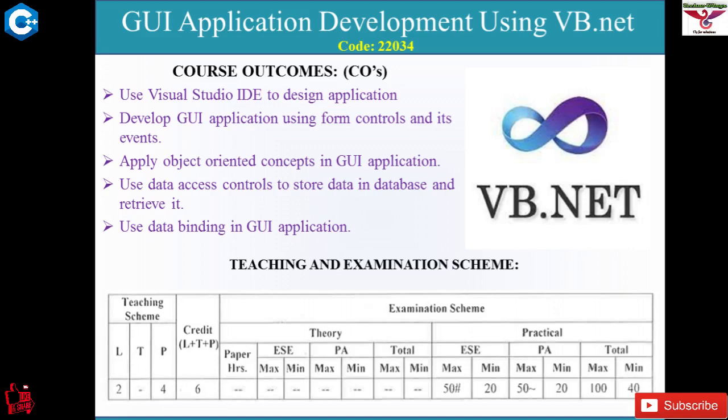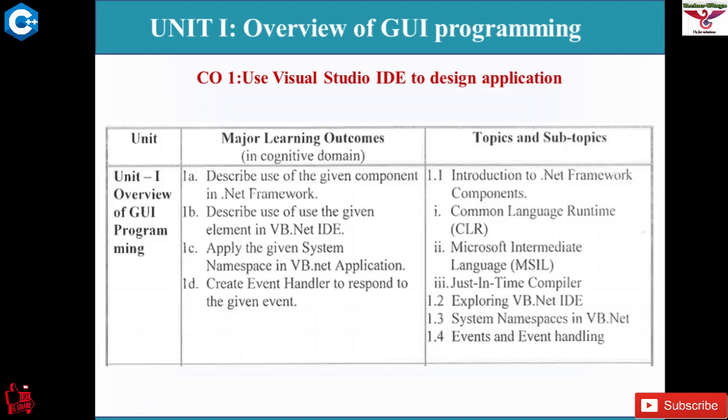Your progressive assessment — record completion — is completely dependent on your practical approach. When we start the first unit of GUI Application Development, it is the Overview of GUI Application Programming. The first topic, 1.1, is Introduction to .NET Framework. VB is a programming language and .NET is a framework.